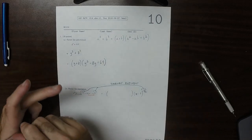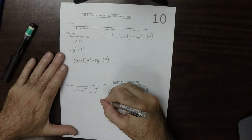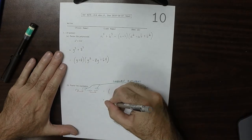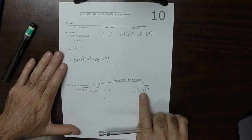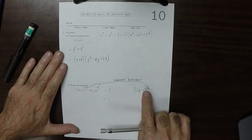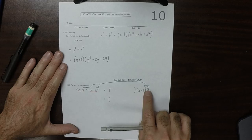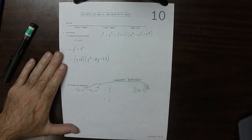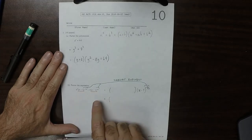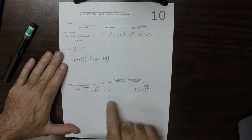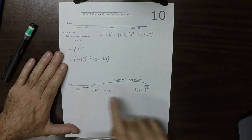Because we're factoring out (x minus 1)^(-1/3), when you factor out an exponent from a sum, the net effect is that you subtract that exponent from the terms inside.